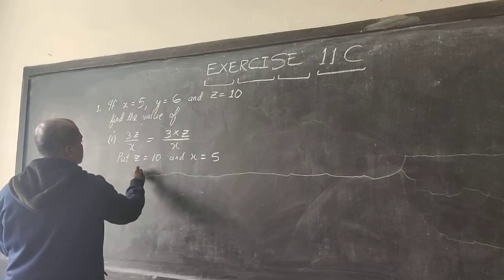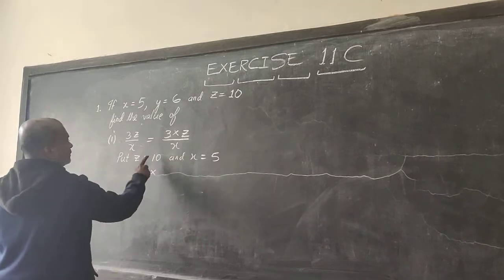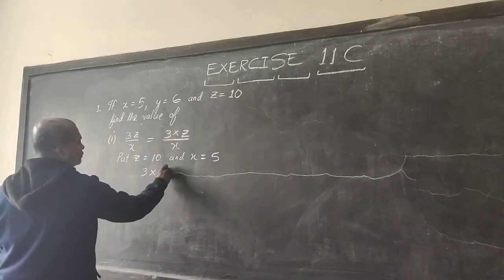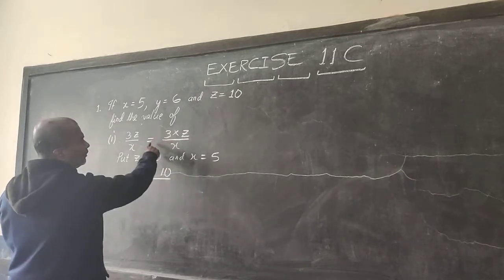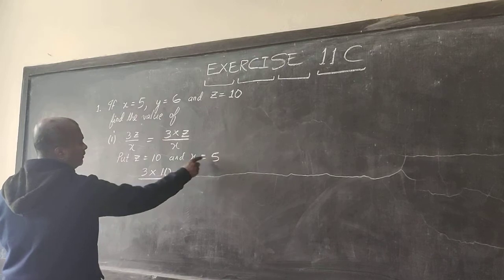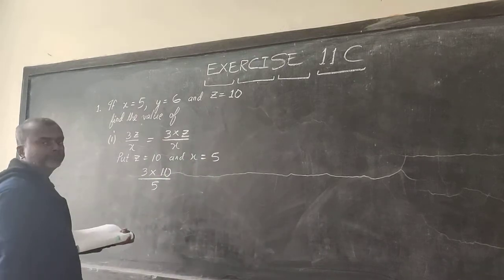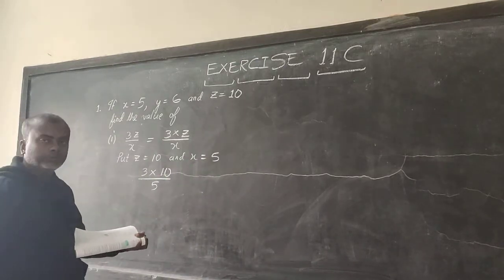So we will have 3 into Z. Z is 10. So 3 into 10 divided by X divided by 5. I hope you have understood.